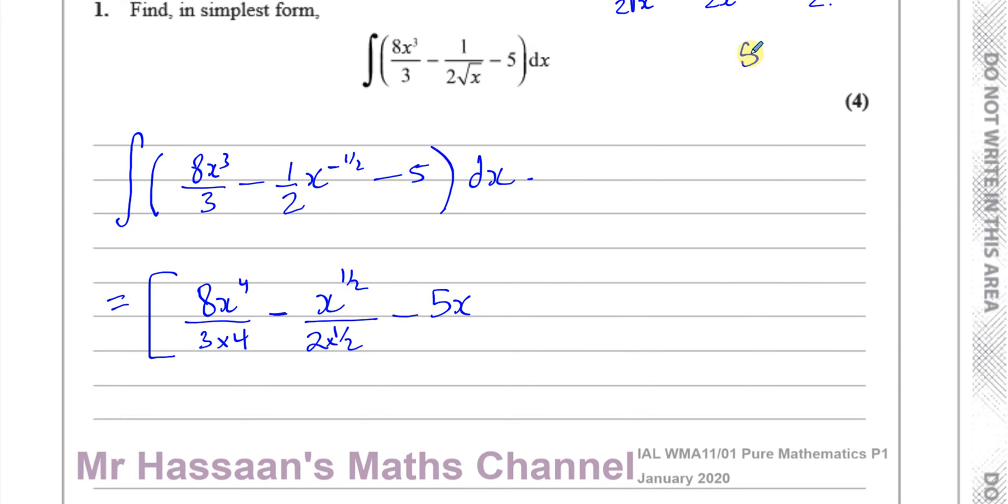You can think of it as, this is 5x to the power of 0 at the moment. And you add 1 to the power, divided by the new power, you get 5x to the power of 1.